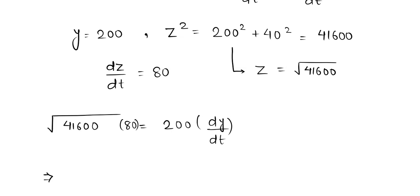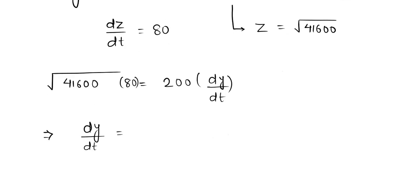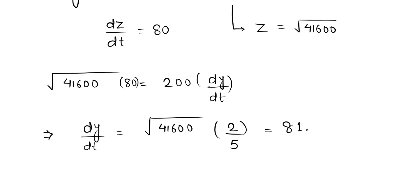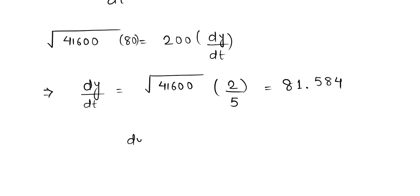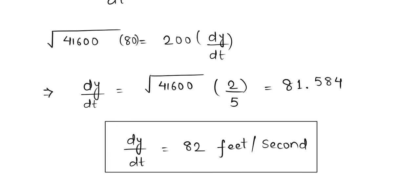Rearranging the equation, dy/dt equals the square root of 41600 multiplied by 80, divided by 200. This comes out to approximately 81.584, which we round off to 82 feet per second. Hence, this is our answer — the approximate actual speed of the red car.